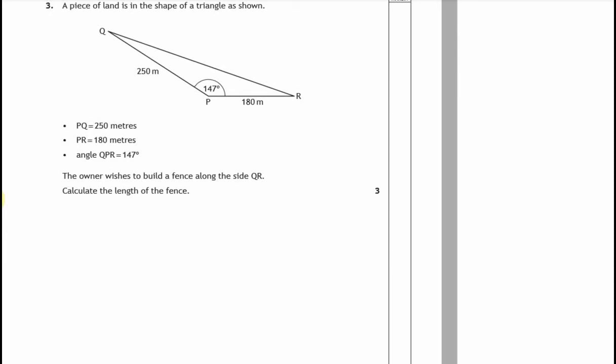Okay, question 3. A piece of land is in the shape of a triangle as shown. PR is 250 meters, so that's shown on the diagram, so let's just score that out. PR is 180. The owner wishes to build a fence along QR, so I'll call that X, shall we? And we're going to calculate the length of that fence.